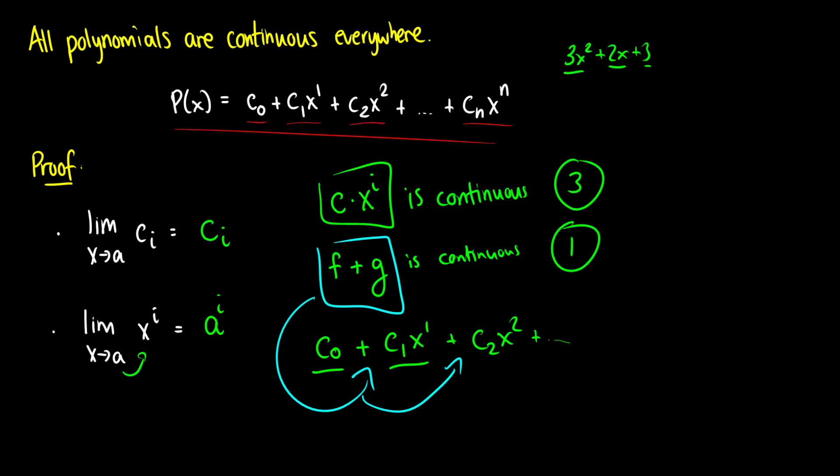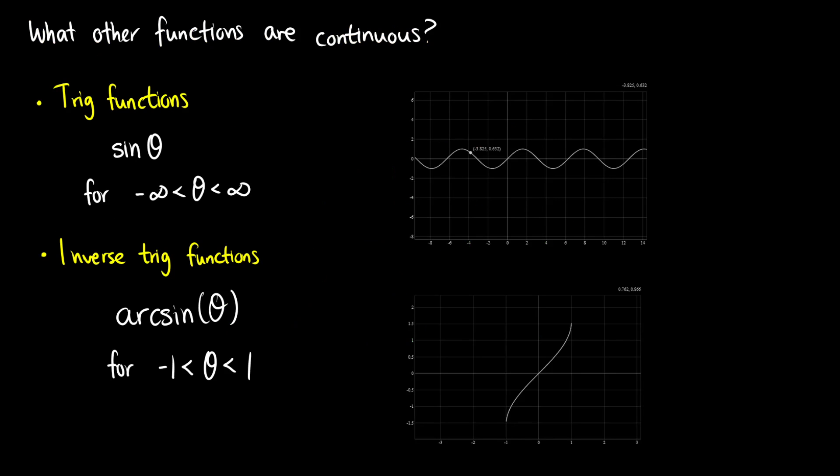What other functions are continuous? We saw polynomials are continuous. Knowing other functions are continuous lets us use our continuity laws on more complex combinations. Sine theta, for example — looking at the sine graph, sine alternates between 1 and negative 1, extending infinitely. No matter what angle we pick, sine is continuous everywhere.